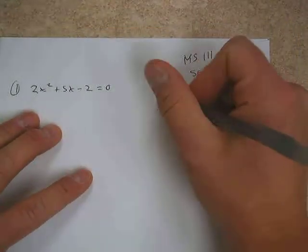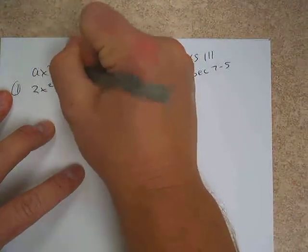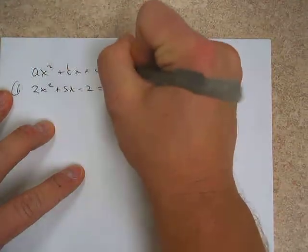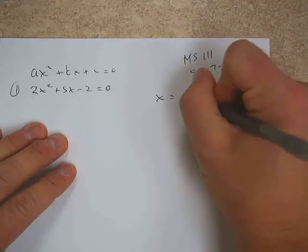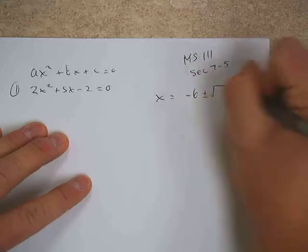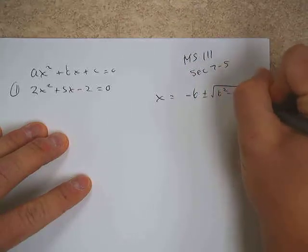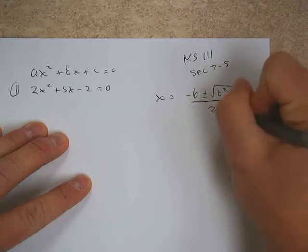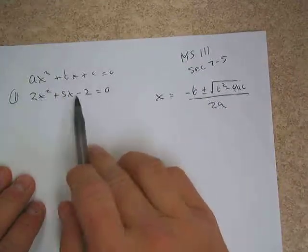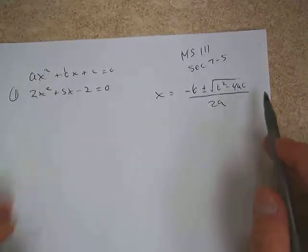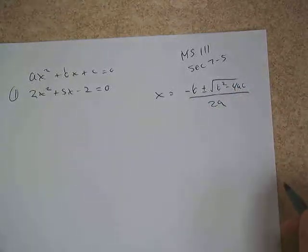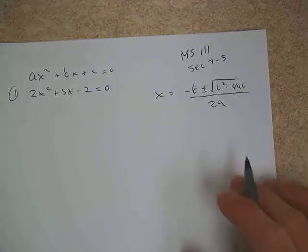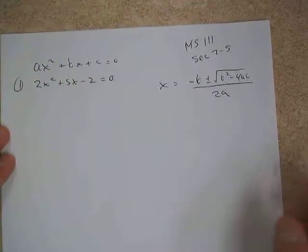The quadratic formula itself: when we have ax squared plus bx plus c equals 0, the formula tells us that the solutions are the opposite of b, plus and minus the square root of b squared minus 4ac, all over 2a. If we take our three numbers a, b, and c and put them in appropriately and follow the order of operations, we get the two x values — the two x-intercepts, which are the two solutions to the quadratic equation.